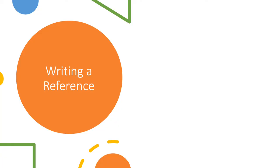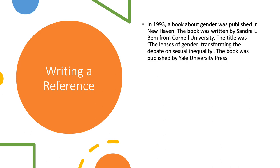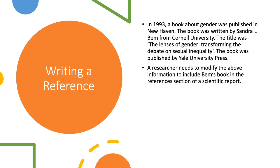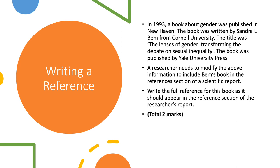And I want you to have a go at writing a reference for a book. So, in 1993, a book about gender was published in New Haven. The book was written by Sandra L. Bem from Cornell University. The title was The Lenses of Gender, Transforming the Debate on Sexual Inequality. And the book was published by Yale University Press. A researcher needs to modify the above information to include Bem's book in the references section of a scientific report. So, your task is to write a full reference for this book as it should appear in the reference section of the researcher's report. Just as a little reminder, you should have the author's names. So, you start with the surname, comma, first name, dot, middle name. Just the initials for the first and the middle name. Then you have the date, the title of the book, the place of publication, and the publisher, which is all in the information above. So, have a go at writing that.